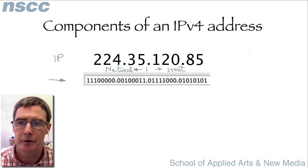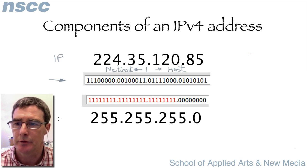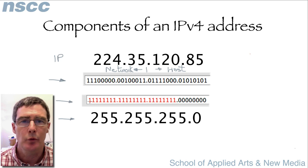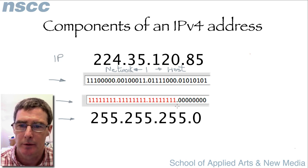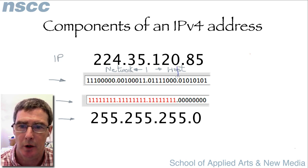Finding this division point is accomplished by the network mask. Let's suppose this network uses this network mask. We're going to convert it to binary, and wherever we have ones, that is the network part. In our example, the division between host and network is right here.